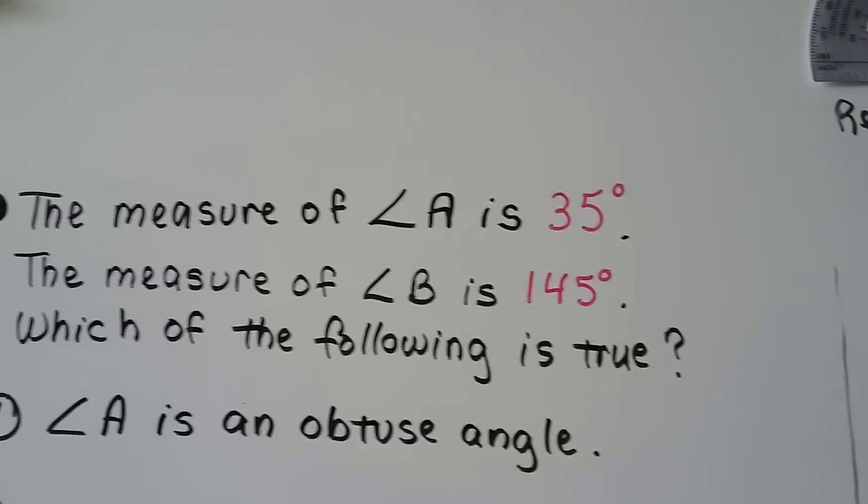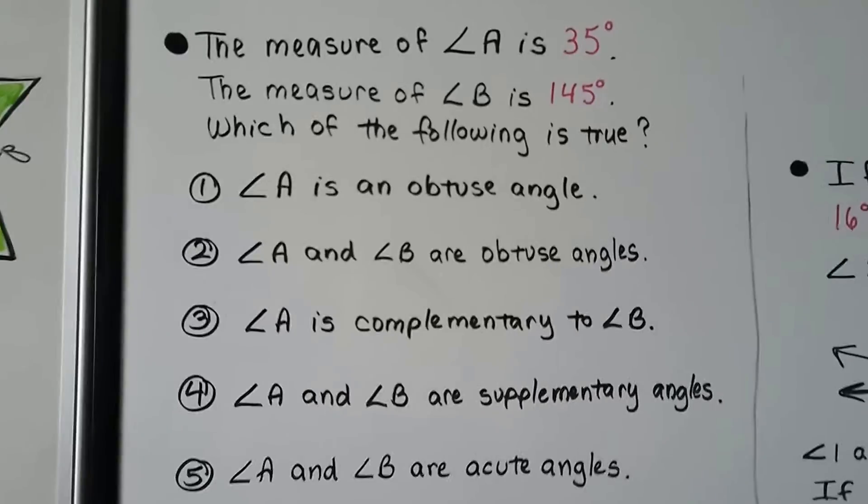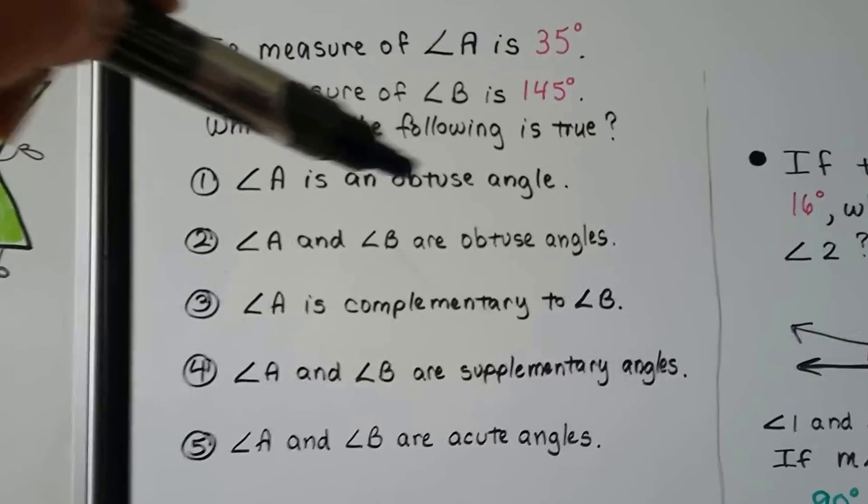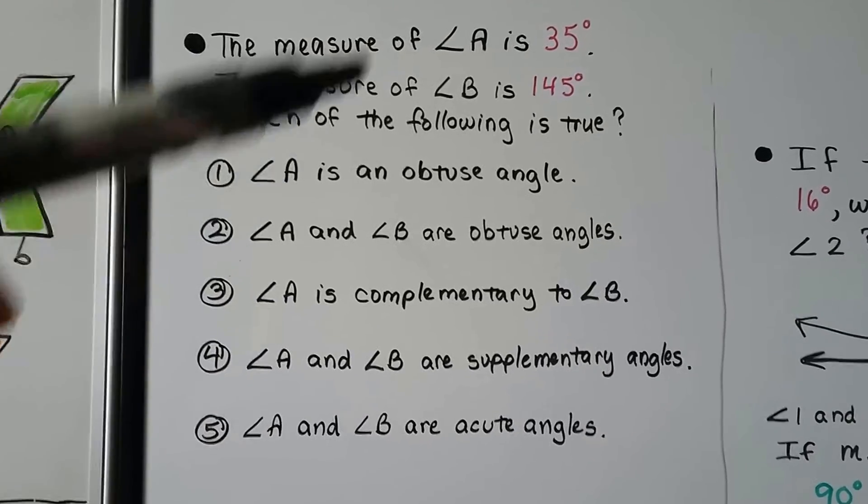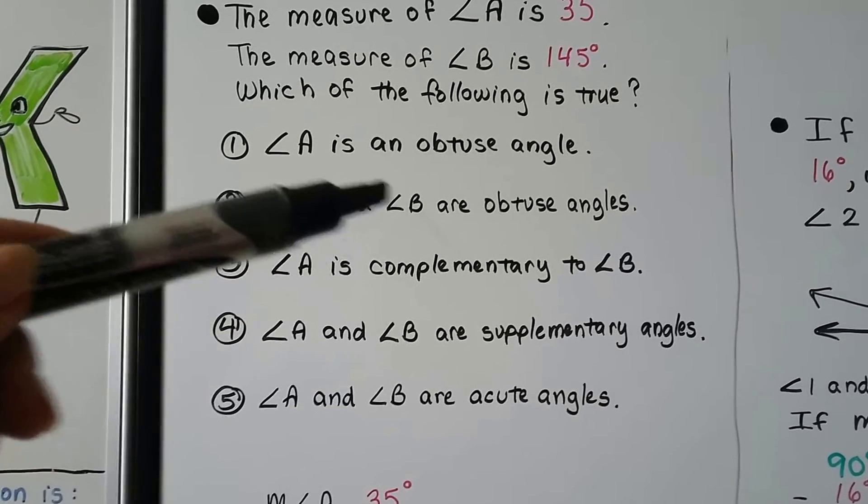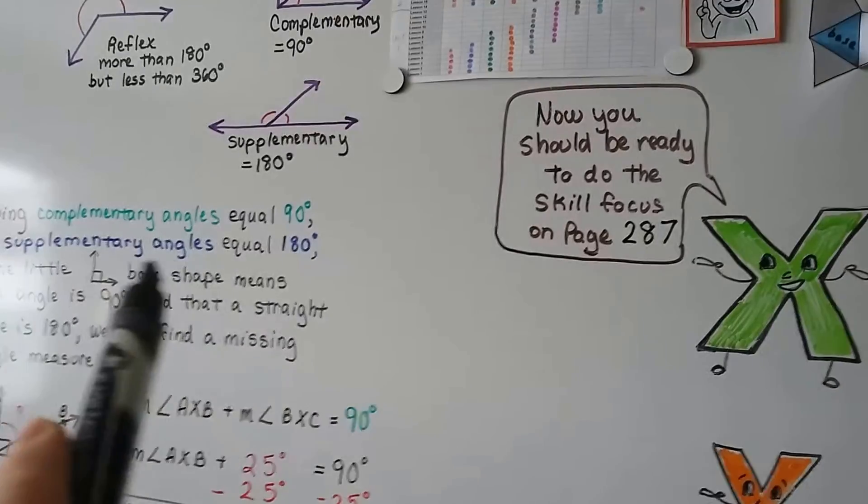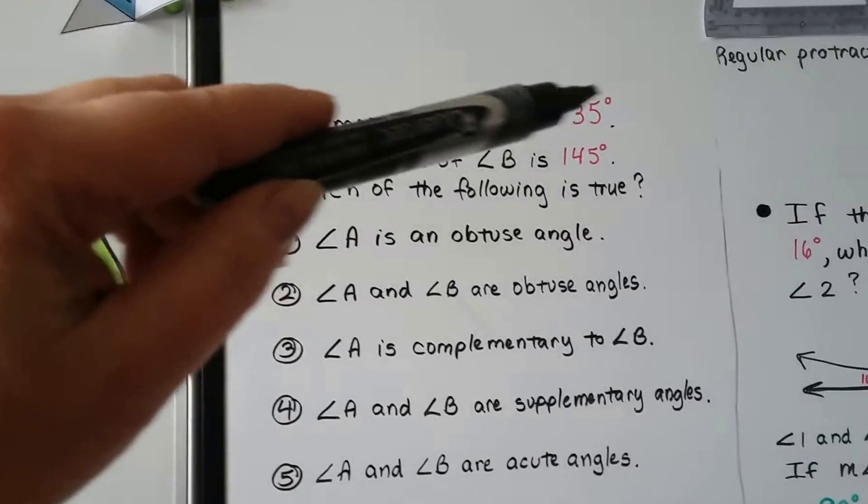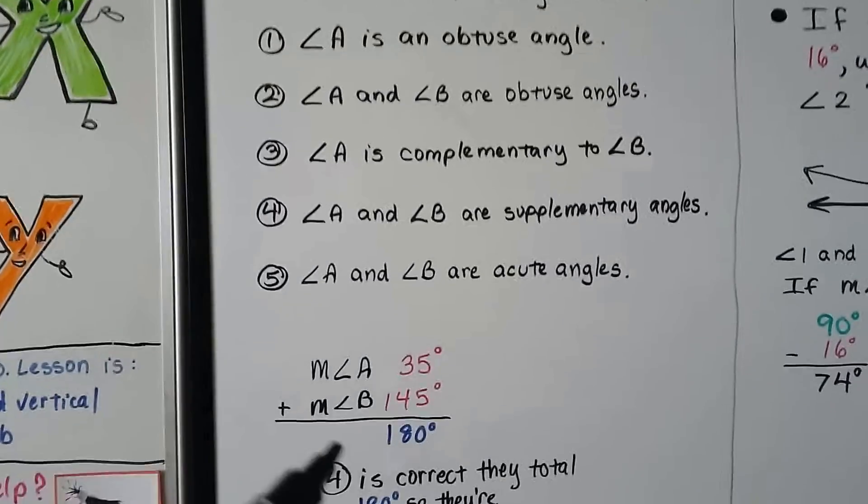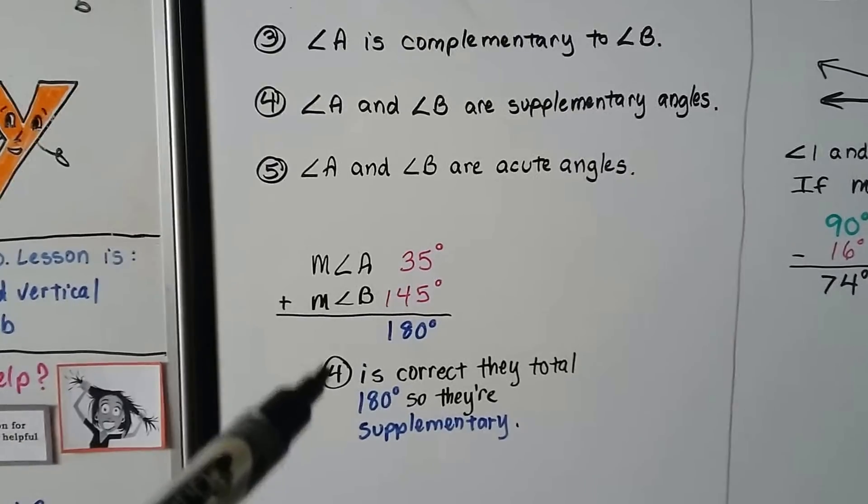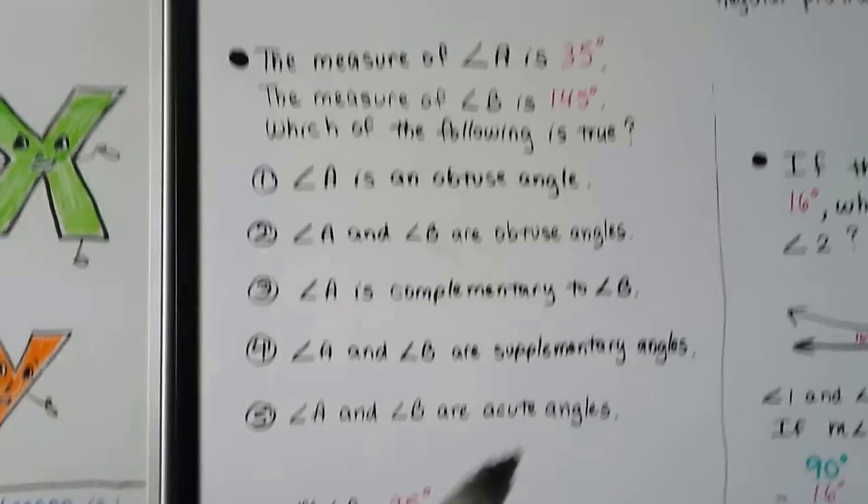The measure of angle A is 35 degrees. The measure of angle B is 145 degrees. Which of the following is true? So we have these five choices. Is angle A an obtuse angle? Well, it's 35 degrees, and remember the obtuse was like the obese one. 35 degrees isn't very big, so no, it's not obtuse. Number 2 says angle A and angle B are obtuse. Well, we know angle A isn't. We just figured that out. So that can't be true. Number 3 says angle A is complementary to B. Well, remember, complementary angles equal 90 degrees and supplementary equal 180. Is 35 plus 145 90 degrees complementary? No. Are angle A and angle B supplementary angles? There you go. If we add the measure of angle A and the measure of angle B, we're going to get 180 degrees. So number 4 is correct. They total 180, so they're supplementary. Our last choice was that they were both acute, and we know 145 degree angle is not acute.